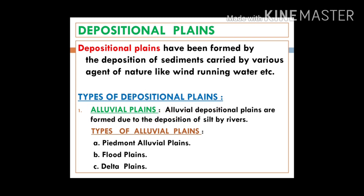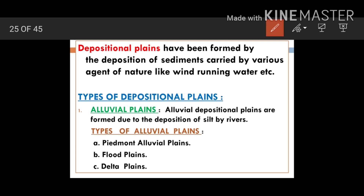Alluvial planes have a subdivision because they are formed at different stages of a river. There is the piedmont or alluvial plain, formed at the foothills of mountainous areas; flood plains, formed during the course of the river when it enters lowland; and delta plains, formed when the river is about to meet the sea. At different stages, different types of plains are formed by the river.